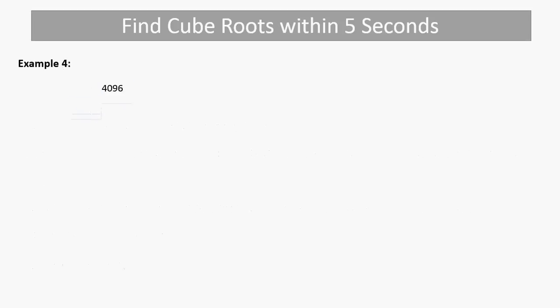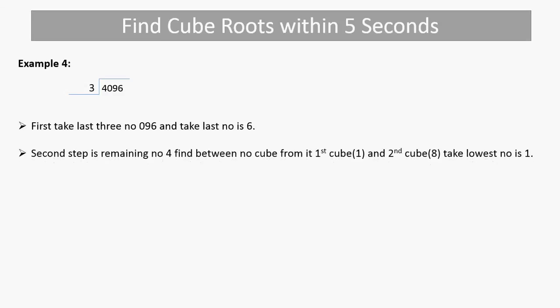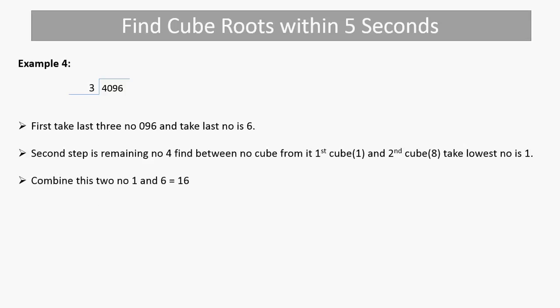Take another example: 4096. Take the last 3 digits: 096. The last digit is 6, so which cube number has last digit 6? 6 has last digit 6. The first digit available is 1. So combining 1 and 6 gives 16. Our answer is 16.